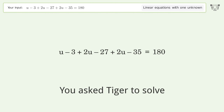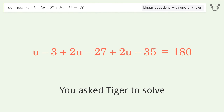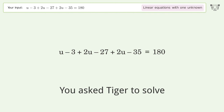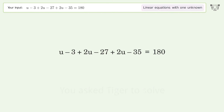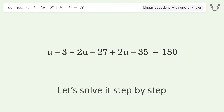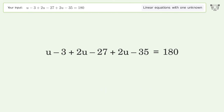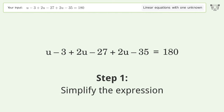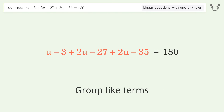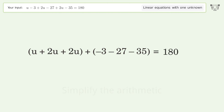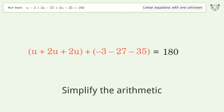You asked Tiger to solve this — it deals with linear equations with one unknown. The final result is u equals 49. Let's solve it step by step: simplify the expression, group like terms, and simplify the arithmetic.